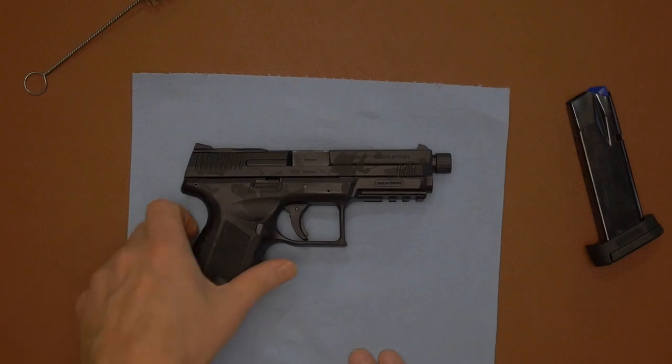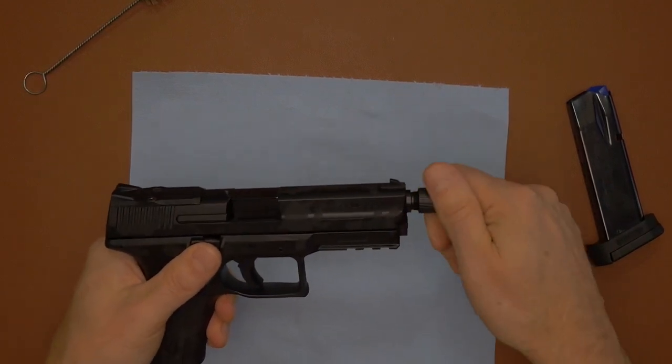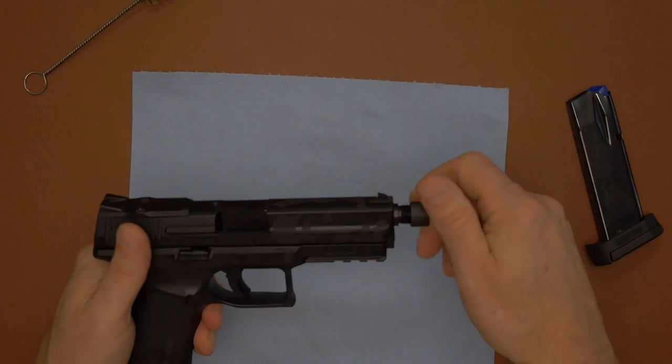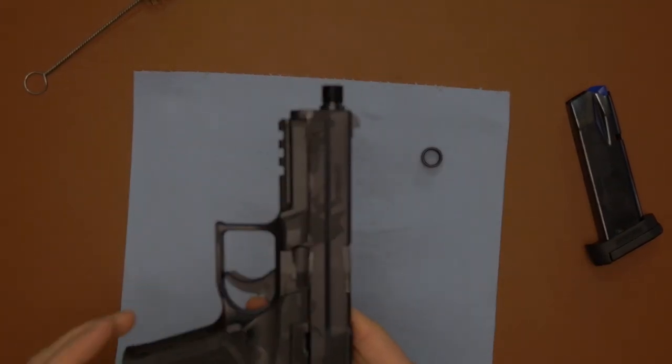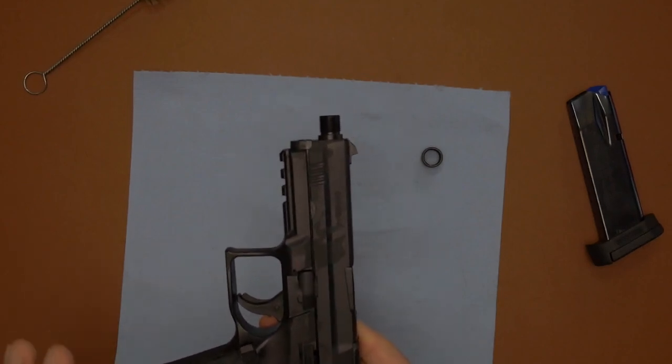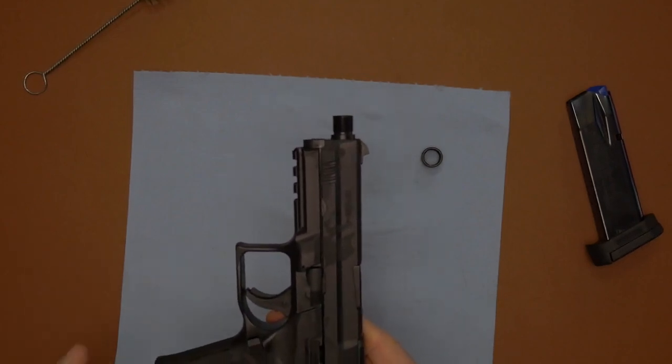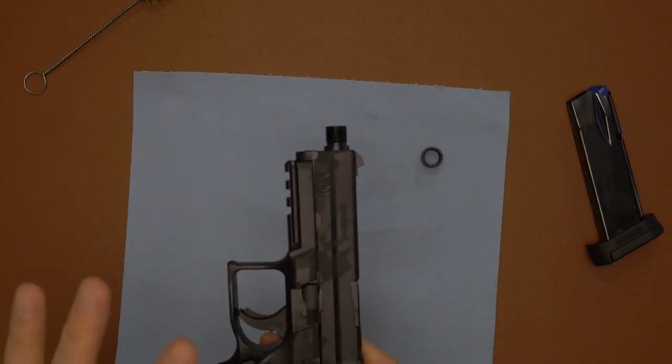So to field strip this, we're going to go ahead and start by removing the thread protector. And this is a similar takedown to a Smith & Wesson. If this is your first time, this is your first firearm and you're trying to learn from here.